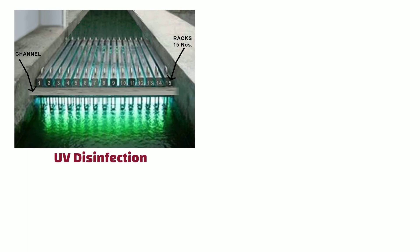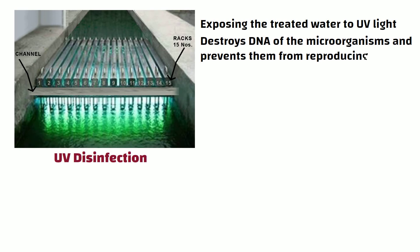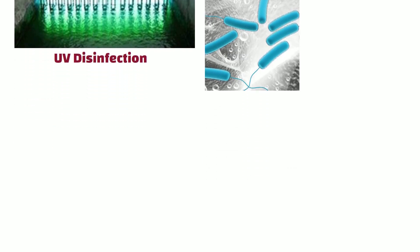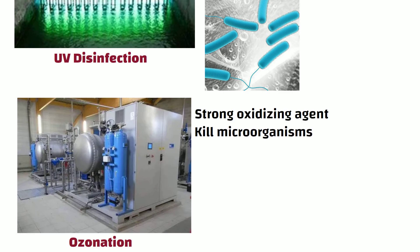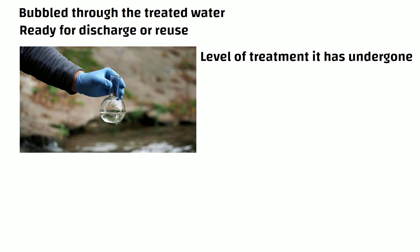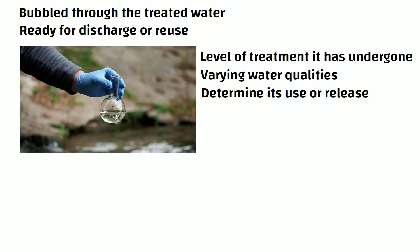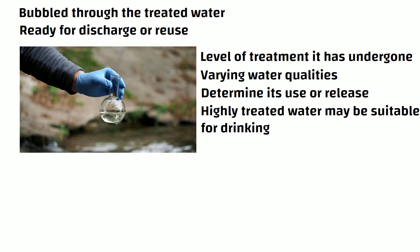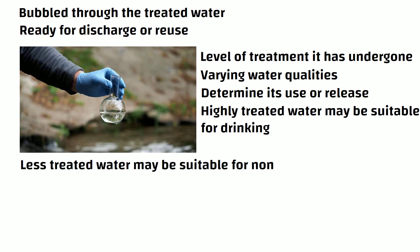UV disinfection involves exposing treated water to UV light, which destroys the DNA of microorganisms and prevents them from reproducing; exposure time is carefully controlled. In ozonation, ozone — a strong oxidizing agent — is generated on site and bubbled through the treated water to kill microorganisms by destroying their cell walls. After disinfection, the treated wastewater is ready for discharge or reuse. The quality of treated water depends on the level of treatment it has undergone — highly treated water may be suitable for drinking, while less treated water may be suitable for non-potable uses such as irrigation.